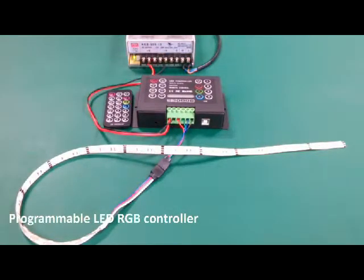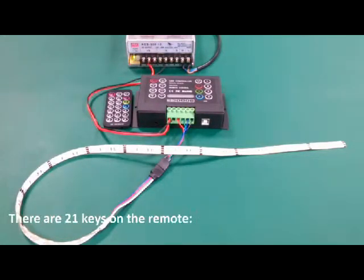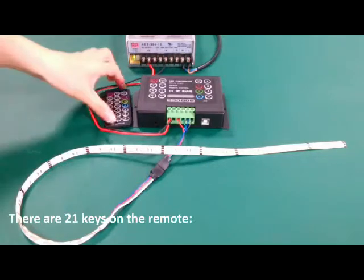This is a constant voltage LED RGB dimmer. It is programmable with DC input, so you need to wire a power supply. It has an IR remote. There are 21 keys on the remote.